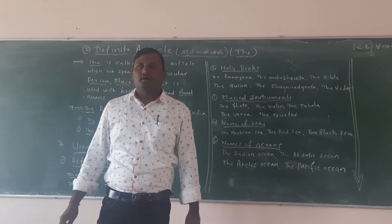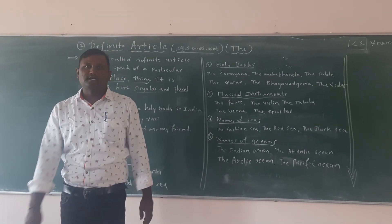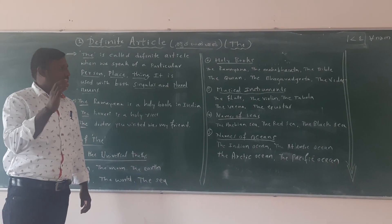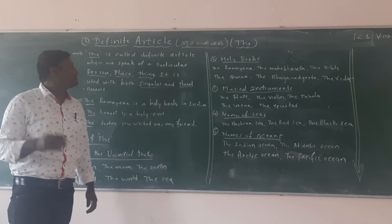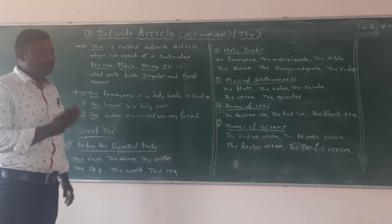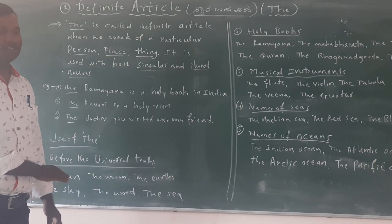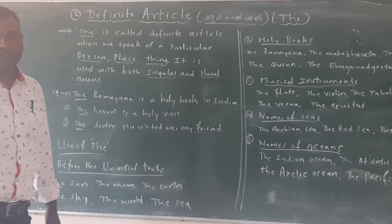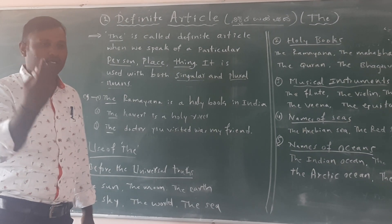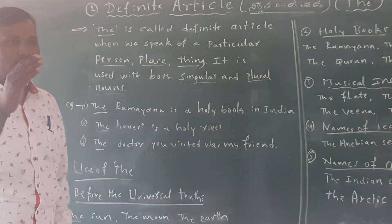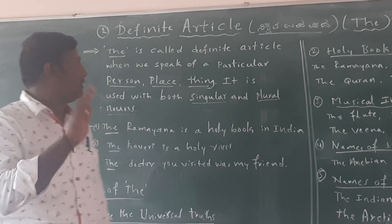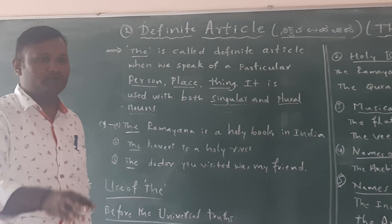Good morning students. In the previous class we discussed the articles. There are two kinds of articles, already know that: definite article and indefinite articles. The first one, indefinite article, we discussed in the previous class. A and an are called indefinite articles. When we use an article, there are so many rules.